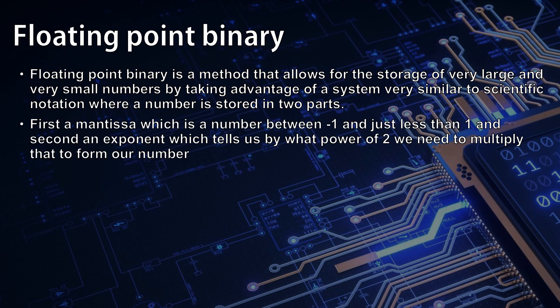The first of these is the mantissa which is going to be a number between minus one and just less than one, and the second is an exponent. This tells us by what power of two we need to multiply that number to form the final number. This works in the same way as scientific notation which effectively shifts the position of the decimal place.